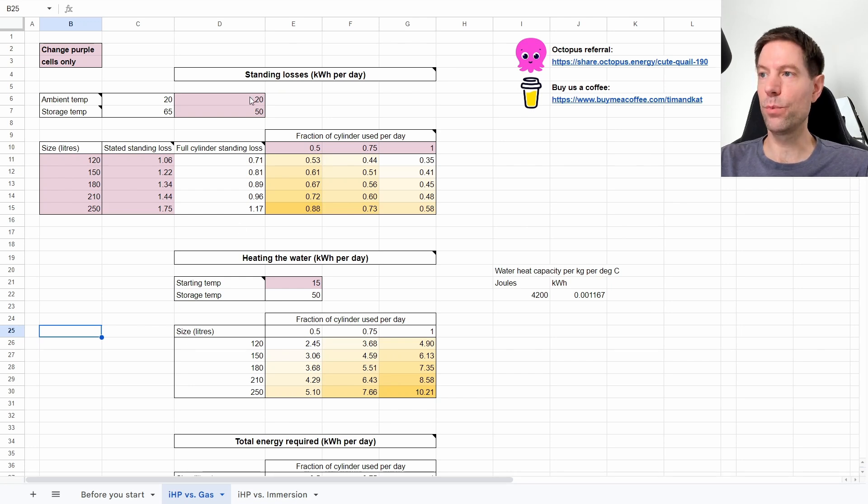So let's start by assuming that you've got your cylinder installed in an airing cupboard and the ambient temperature in that situation would be 20 degrees, so that's what we've got here and that's what I assumed in my original video. I also assumed in the original video that the average starting temperature of the water going into the cylinder is 15 degrees, and that's an average between winter at about 10 degrees and summer of about 20 degrees.